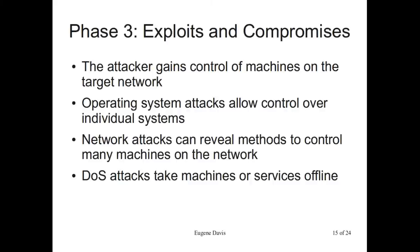Phase three is exploits and compromises — the stage where an attacker gains actual control of a machine on a target network. This is probably what everybody's thinking of when they hear the term 'hacker.' An operating system attack allows you to gain control over individual systems, whereas a network attack lets you gain access into the network. From there, you usually start attacking the individual operating system. A DOS attack simply takes machines or services offline. A network attack may give you an entry point: placing a sniffer on the network can give you credentials and other sensitive data.